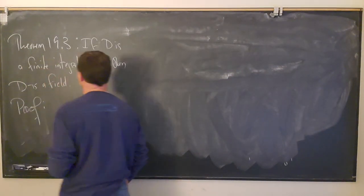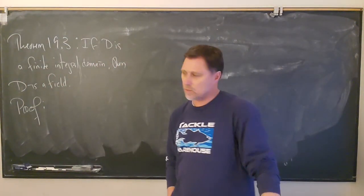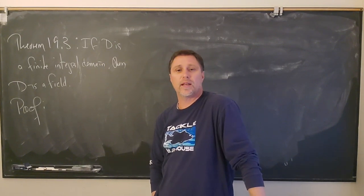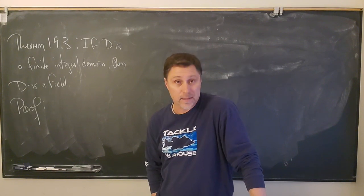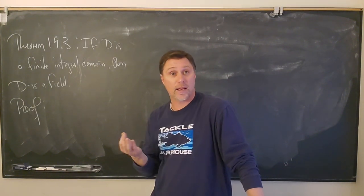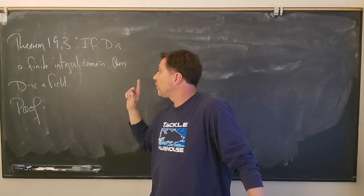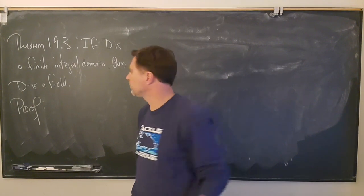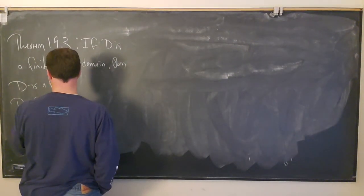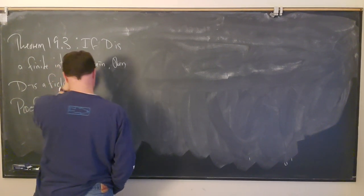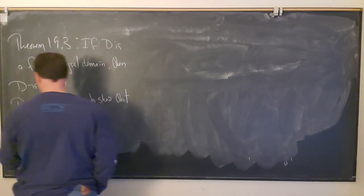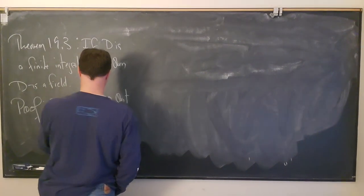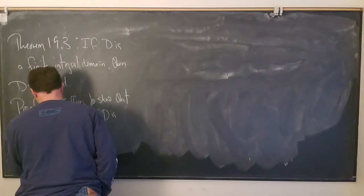So let's think about what we have. We're going to assume that D is an integral domain, which means it's a commutative ring with one. The only thing we need to check is that an integral domain is kind of one step away from being a field. What's missing is there are some elements that are not necessarily units. So what we need to do is, for a finite integral domain, show that every non-zero element is a unit — meaning it has a multiplicative inverse. So it suffices to show that every non-zero element of D is a unit.